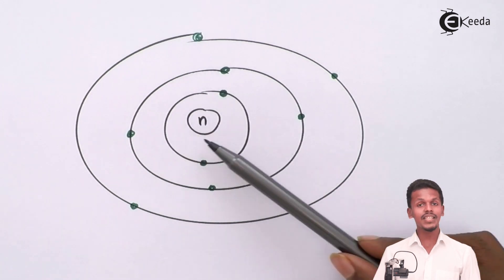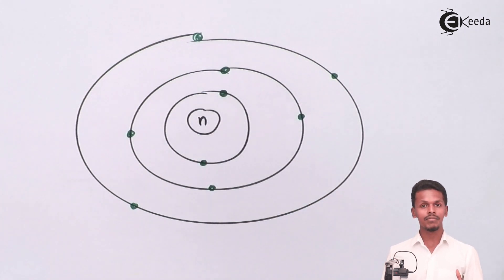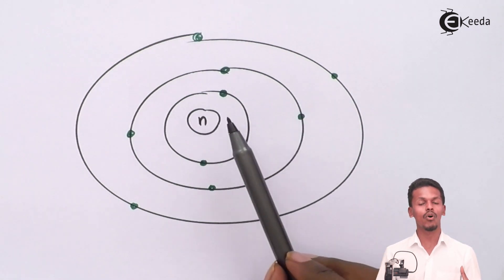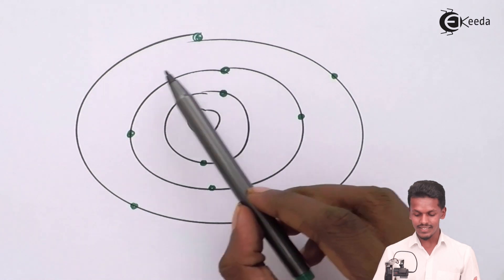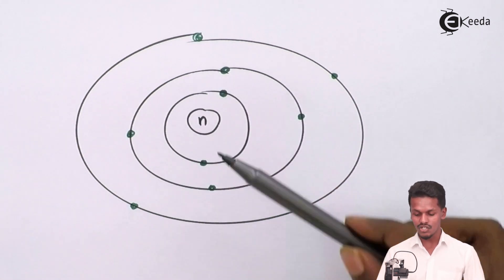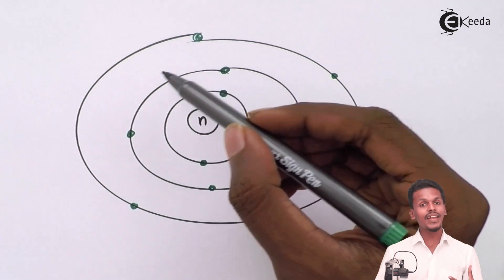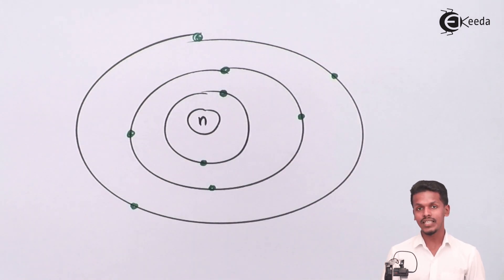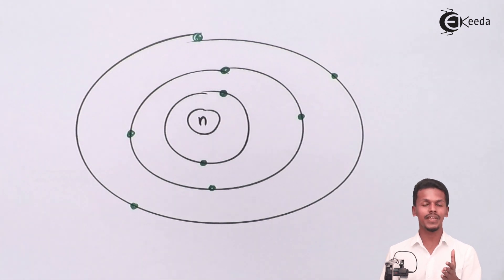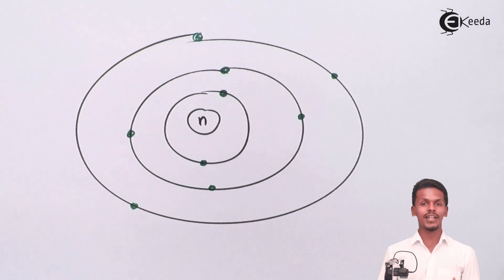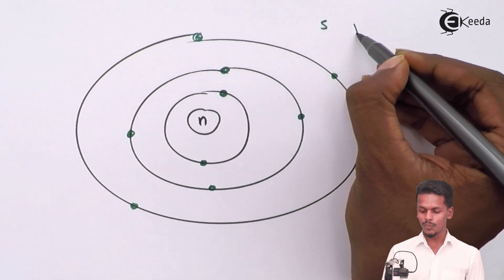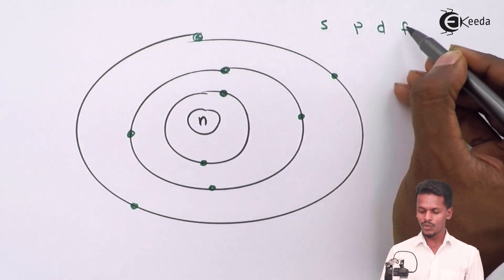Because of the electrons that are present very close to the nucleus, the nuclear charge will go on increasing towards these electrons, and the attraction of the inner electrons will be more. If the number of electrons increases, and moreover if we are talking about orbitals like S, P, D, and F, it has been observed that the S orbitals have basically more shielding effect compared to P, compared to D, and compared to F.